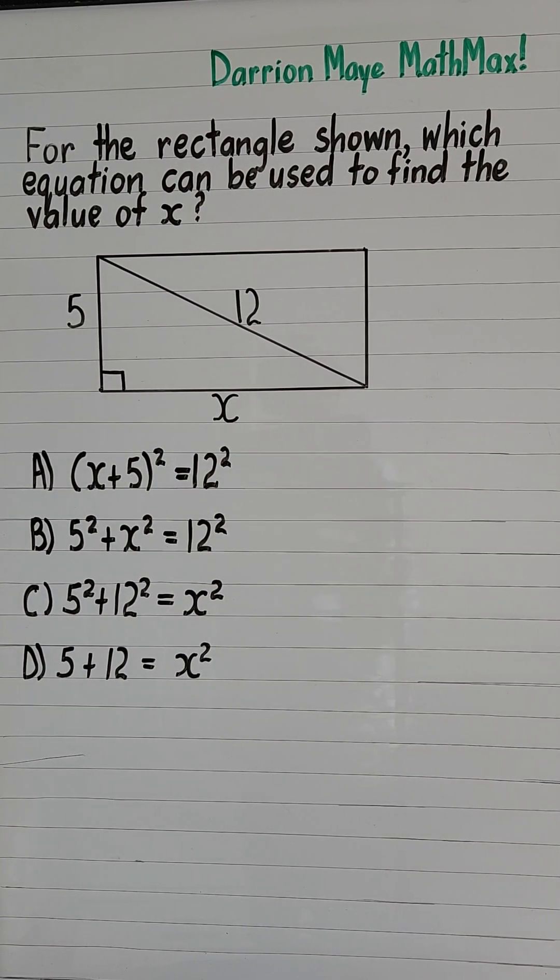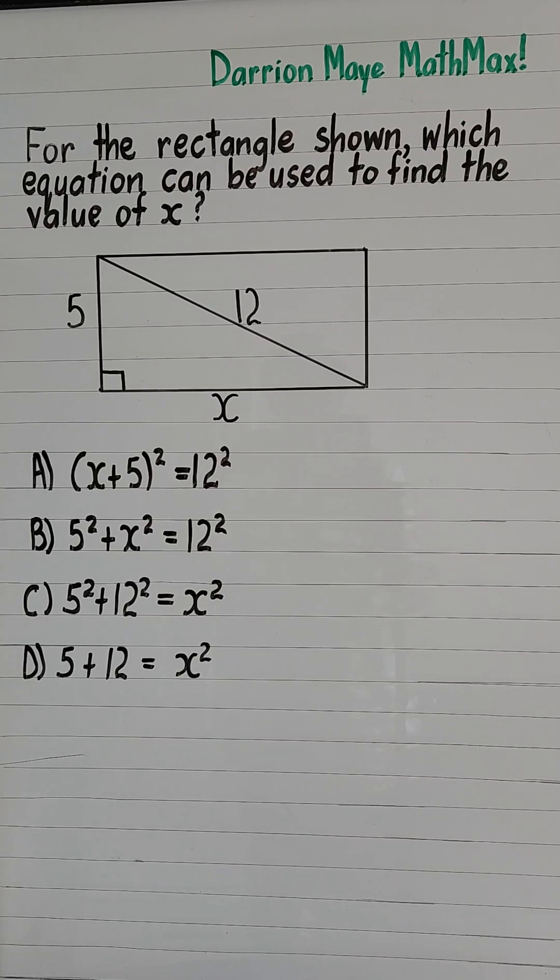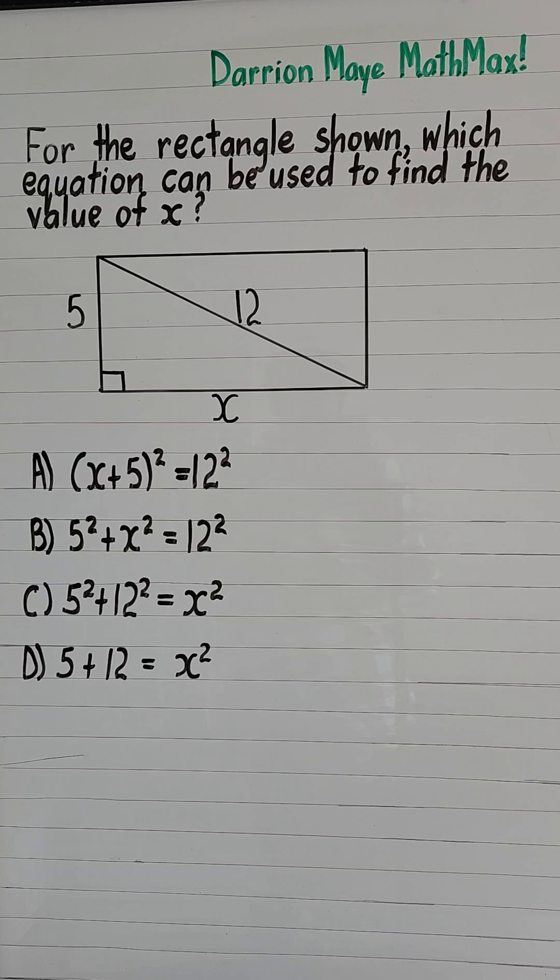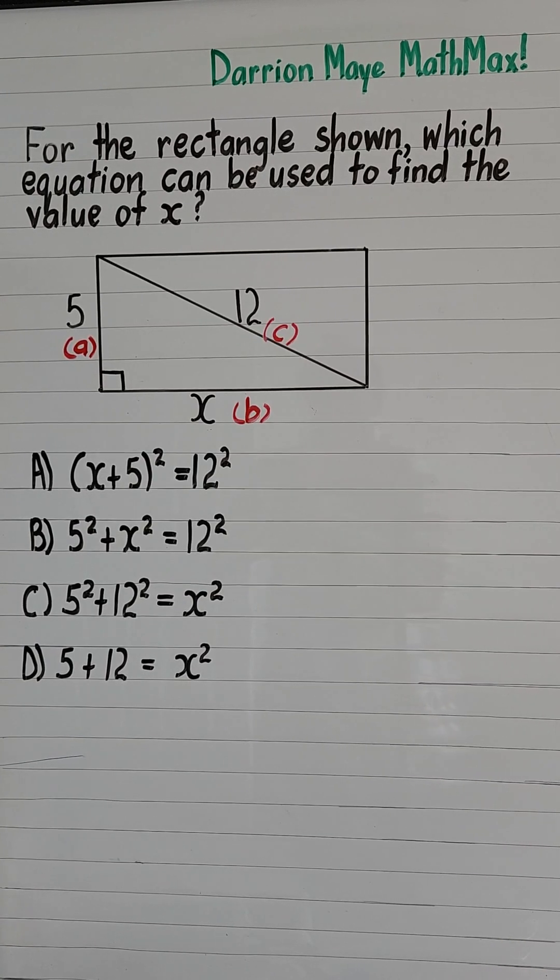For the rectangle shown, which equation can be used to find the value of x? You'll notice that we have a diagonal line dividing our rectangle into two congruent triangles. Let's focus on the bottom triangle and label it triangle ABC.